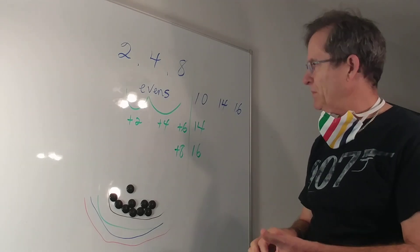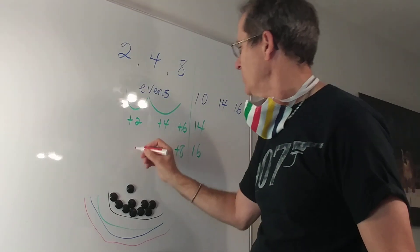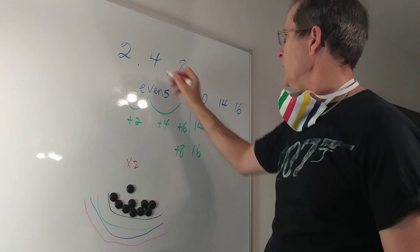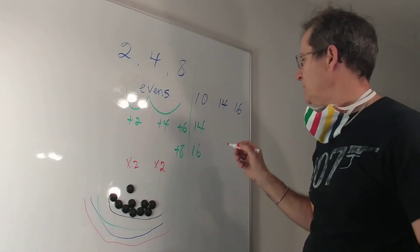Well those are all quite possible. What if I do multiplication? If I do multiplication I'm multiplying by two to get four, I'm multiplying by two again to get eight, so I'd multiply by two again and give me 16.